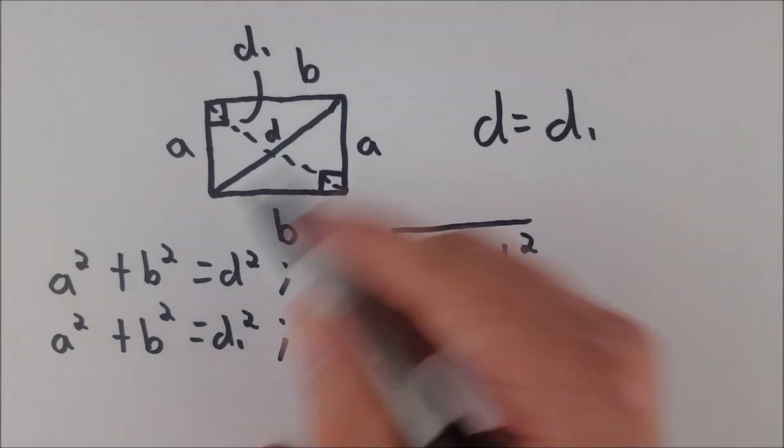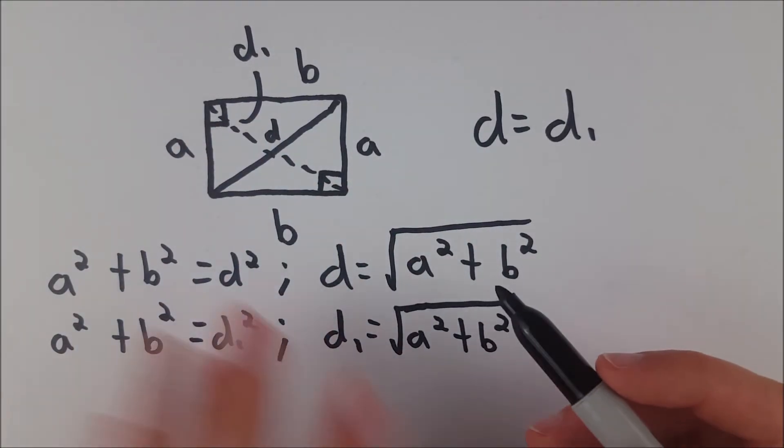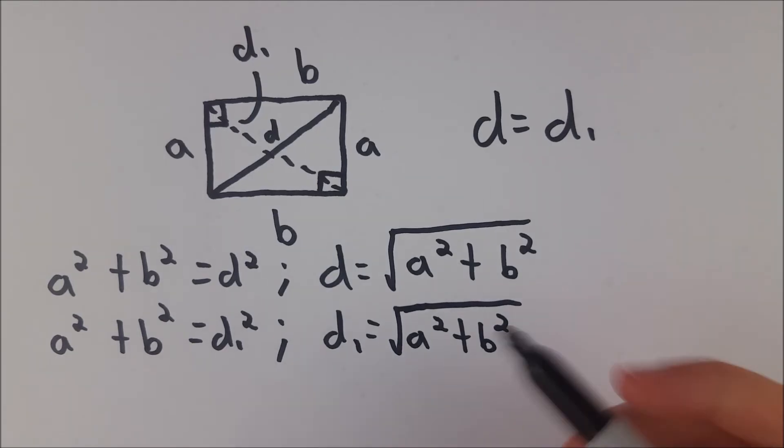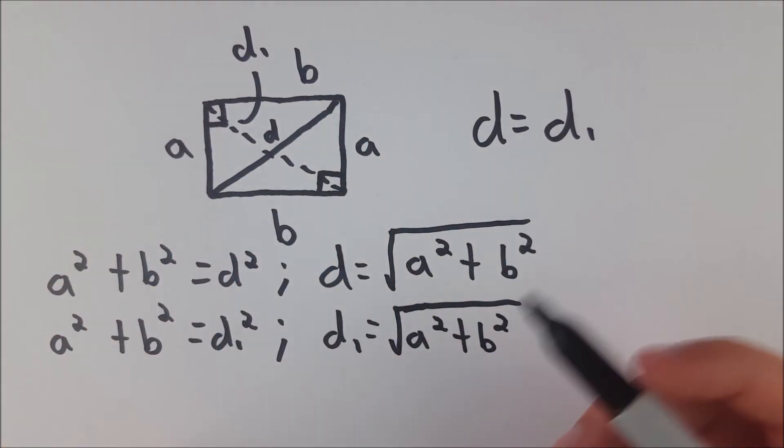And those are the two diagonals of any generic rectangle. We didn't assume anything special about this rectangle, just use the definition of a rectangle to bring us through two instances of the Pythagorean theorem, showing us that we get the same length for each diagonal.